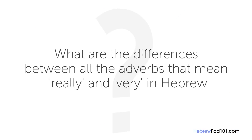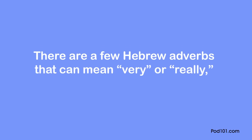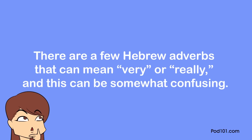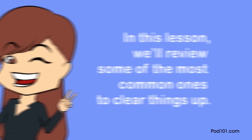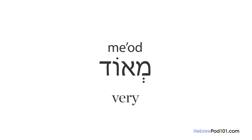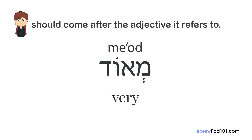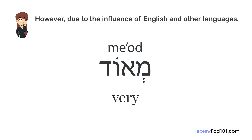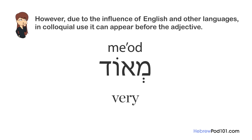The question for this lesson is: what are the differences between all the adverbs that mean 'really' and 'very' in Hebrew? There are a few adverbs that can mean 'very' or 'really,' and this can be somewhat confusing. The most basic one — the most accurate equivalent of 'very' — is 'me'od.' Like any other adverb in Hebrew, 'me'od' should come after the adjective it refers to, though due to English influence it can appear before the adjective in colloquial use.